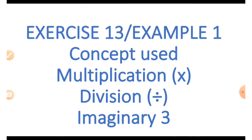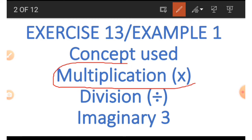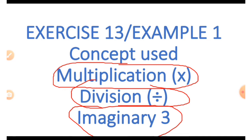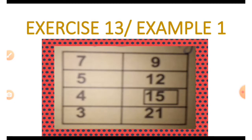In example one we are going to be making use of three concepts: multiplication, division, and imaginary numbers. Imaginary numbers are numbers that do not appear in the example but are used in the example. In this example we have an imaginary three.